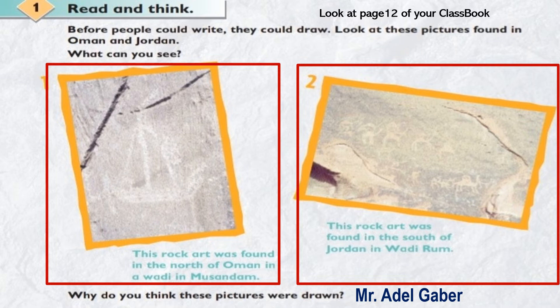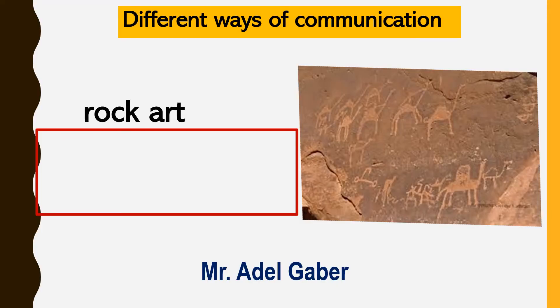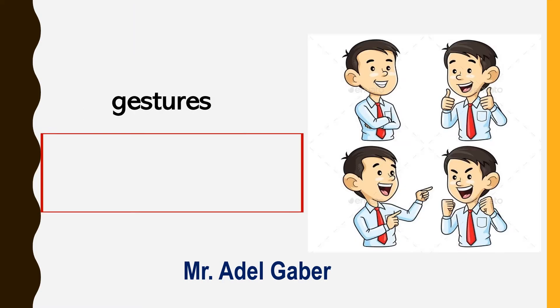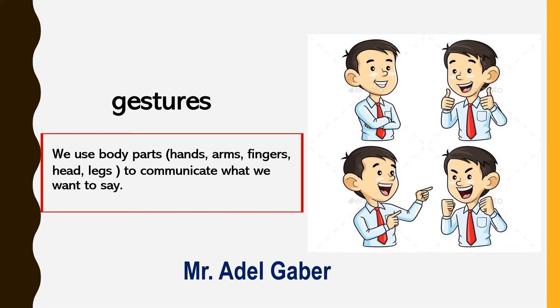Why do you think these pictures were drawn? It's a way of communication — they wanted to leave a message. What are different ways of communication? One of them is rock art. People used to draw pictures and tell each other stories as a way of recording their history. Gestures: we use body parts — hands, arms, fingers, head, or legs — to communicate what we want to say.